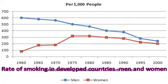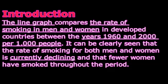In the conclusion, you can explain the overall trend shown in the graph. Let us see an example of an introduction. Just go through this line graph: 'The line graph compares the rate of smoking in men and women in developed countries between the years 1960 and 2000. It can be clearly seen that the rate of smoking for both men and women is currently declining, and that fewer women have smoked throughout the period.' So this is a typical example of an introduction.